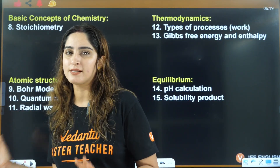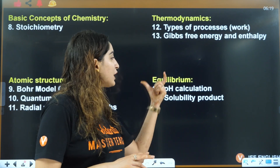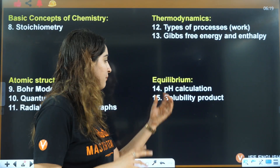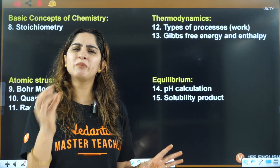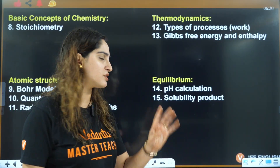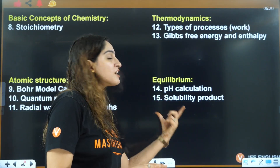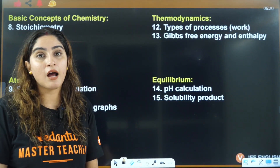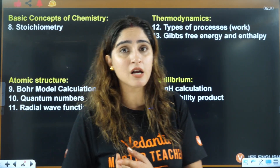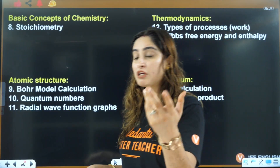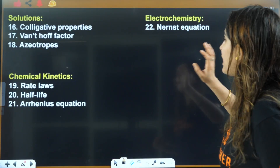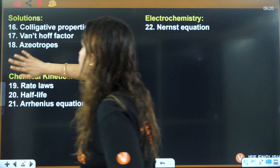In equilibrium, I'm covering both chemical and ionic equilibrium. For chemical equilibrium, the simple formula of Kp and Kc and the law of mass action. The application part — majorly questions are asked from ionic equilibrium: pH calculation, solubility product, buffer solution pH calculation. These questions are asked directly from your formulas.